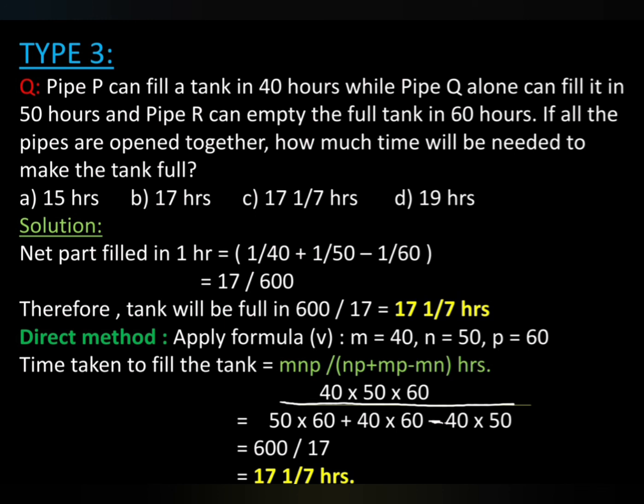Direct method: Apply the fifth formula where m is 40, n is 50, p is 60. Time taken to fill the tank is mnp by np plus mp minus mn hours. Substituting values: 40 into 50 into 60 by 50 into 60 plus 40 into 60 minus 40 into 50, equals 600 by 17, equals 17 and 1 by 7 hours. Option C.